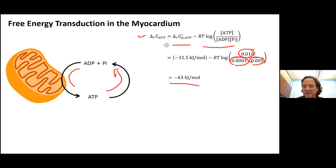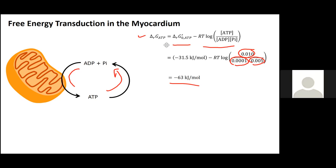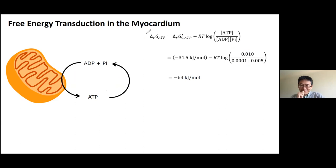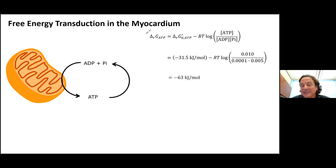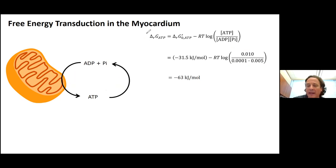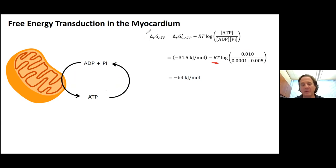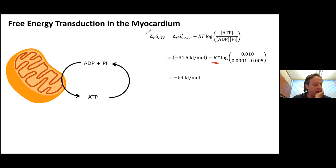Is minus 63 kilojoules per mole a lot or a little? It is a lot compared to many reactions in the cell. One RT is on the order of 2.5 kilojoules per mole, so 63 is a lot bigger in magnitude. I like to think about this number as an energy density.